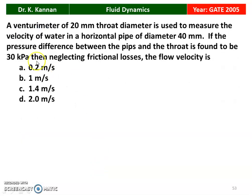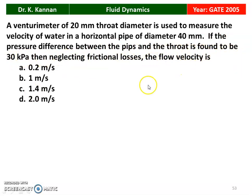The next question: a venturimeter of 20 mm throat diameter is used to measure the velocity of water in a horizontal pipe of diameter 40 mm. If the pressure difference between the pipe and the throat is found to be 30 kilo Pascal, neglecting friction losses, the flow velocity is 2 meters per second. We will see how in the next slide.